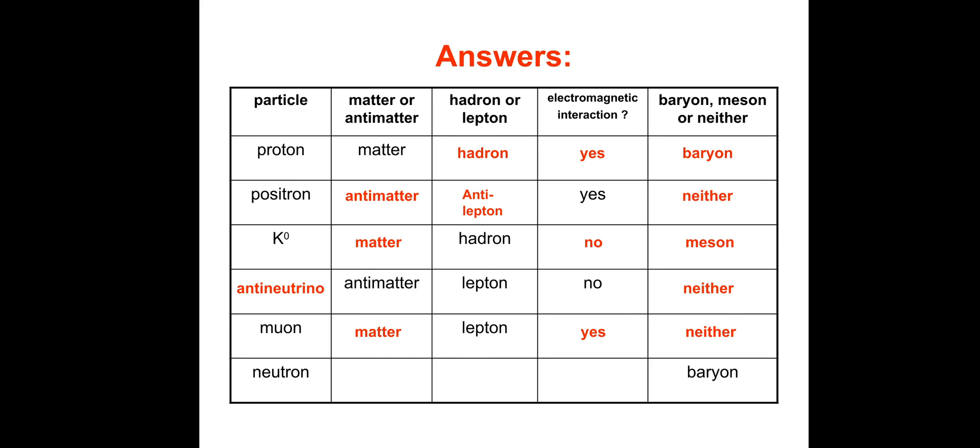This last one is a neutron. Matter or antimatter? Definitely matter. Hadron or lepton? Definitely a hadron. Electromagnetic interaction? No, because it's got no charge. Hopefully that went okay. Hopefully you've got some comprehensive notes, and I hope that helped. I'll see you on the next video. Thank you.